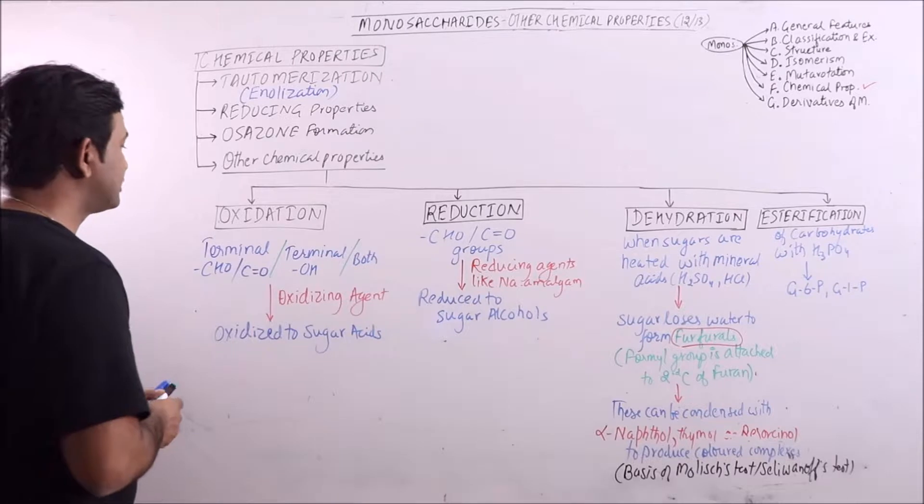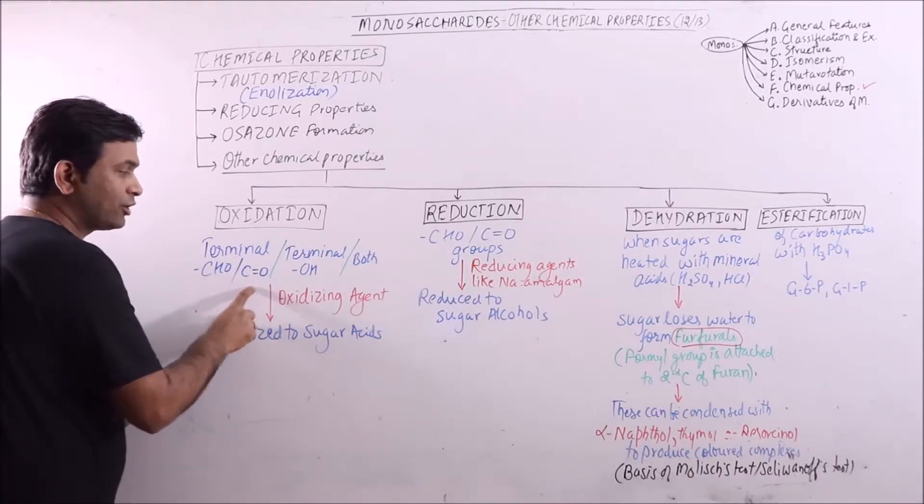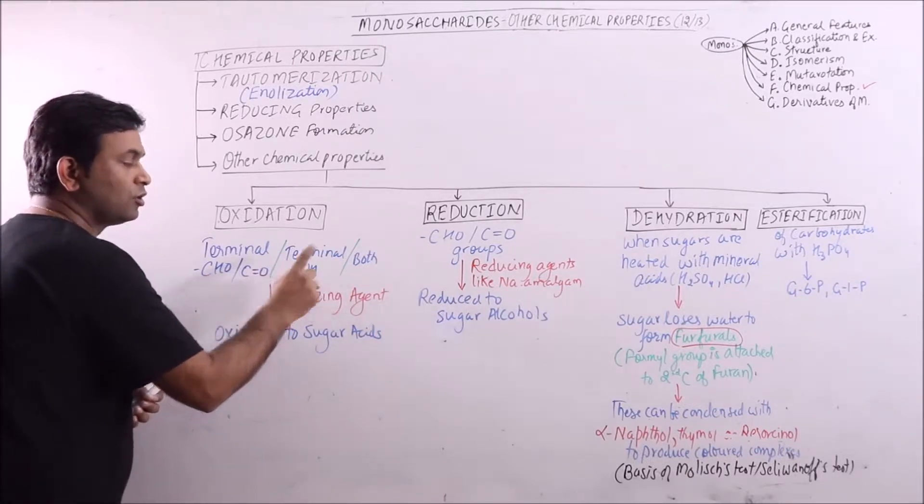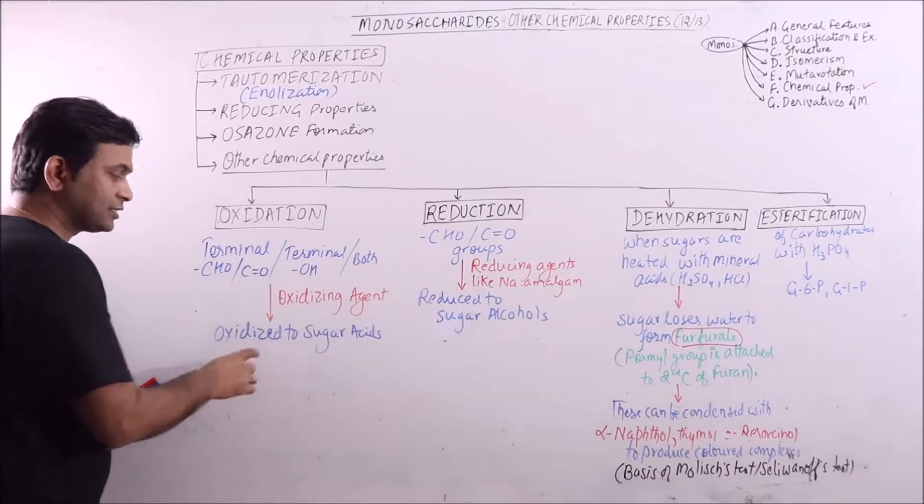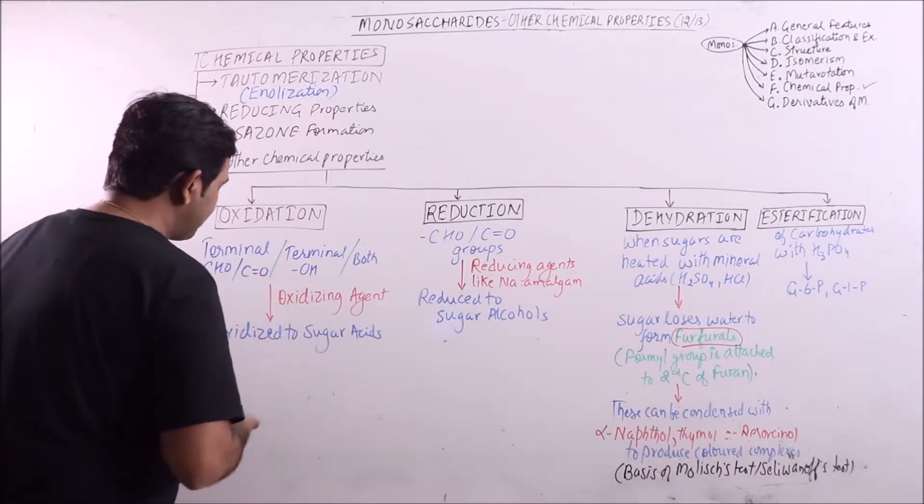First of all I will discuss oxidation. If terminal aldehyde or ketone group or hydroxyl group or both are oxidized, then sugar acids are formed. For example,